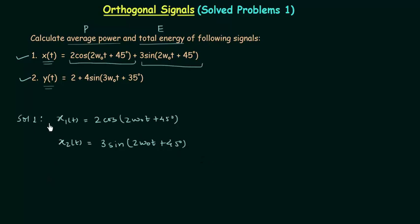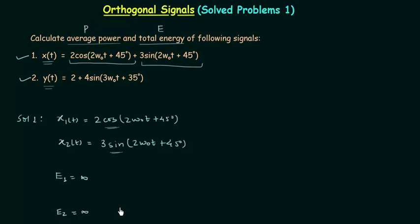We will first calculate the average power of signals x1(t) and x2(t). Both x1(t) and x2(t) are periodic signals. Therefore, the total energy E1 of x1(t) is equal to infinity, and the total energy E2 of x2(t) is also equal to infinity. Periodic signals are power signals, and in the case of power signals, total energy is equal to infinity.